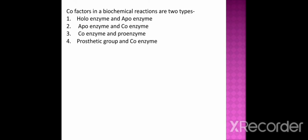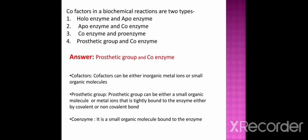Next question: co-factors in a biochemical reaction are of two types — option 1 holoenzyme and apoenzyme, option 2 apoenzyme and coenzyme, option 3 coenzyme and proenzyme, option 4 prosthetic group and coenzyme. The correct option is prosthetic group and coenzyme. Co-factors can be either inorganic metal ions or small organic molecules. Prosthetic group can be a small organic molecule or metal ion tightly bound to the enzyme by covalent or non-covalent bonds. Coenzyme is a small organic molecule that is bound to the enzyme and can be easily dissociated.